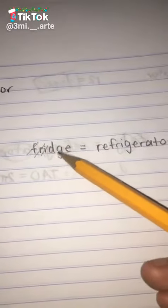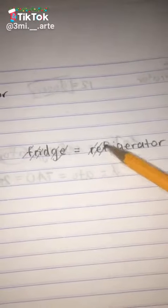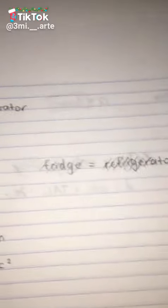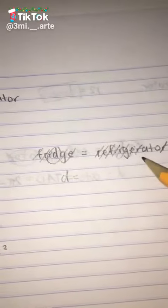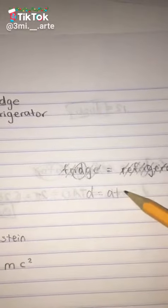all you have to do is just cross out the like terms just like this, and then you're left with D. And D is equal to what is left over on this side. A-T-O.